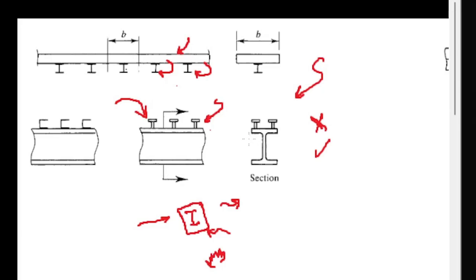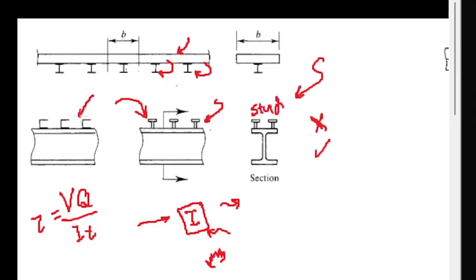The unified behavior is only possible if slippage is restrained. This is done by resisting the shear that develops between the steel and concrete parts — known as VQ/IT in the elastic domain, which gives us the shear stress tau. This tau must be resisted by providing proper resistance. This restraining action is usually done by studs, and also unconventionally by C-channels, although studs are the most common method, welded at intervals.